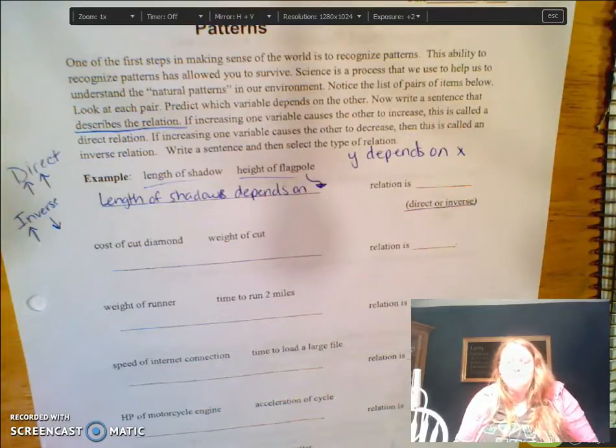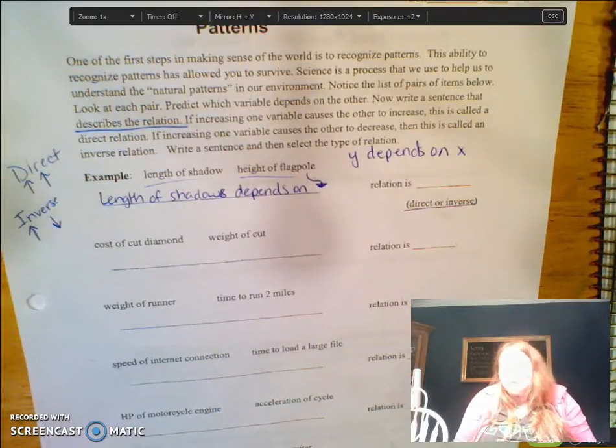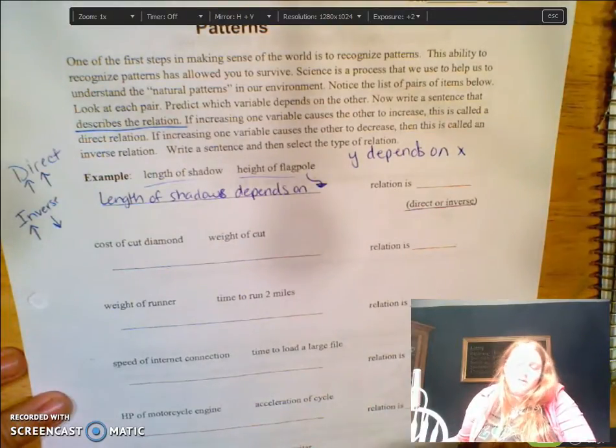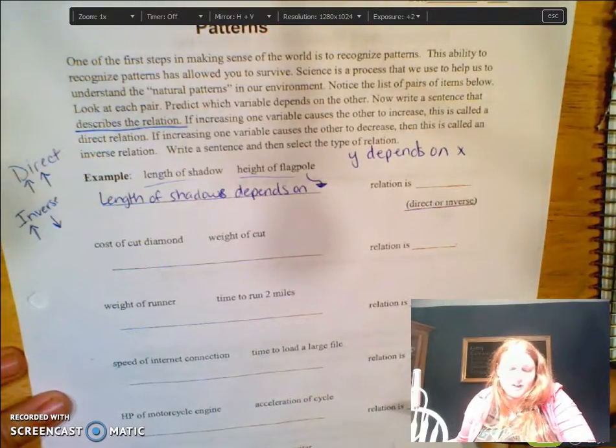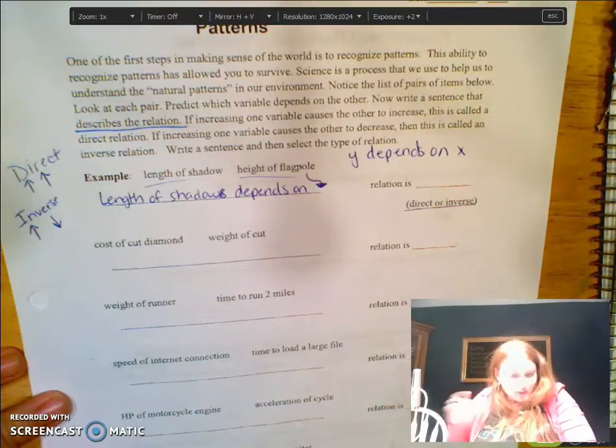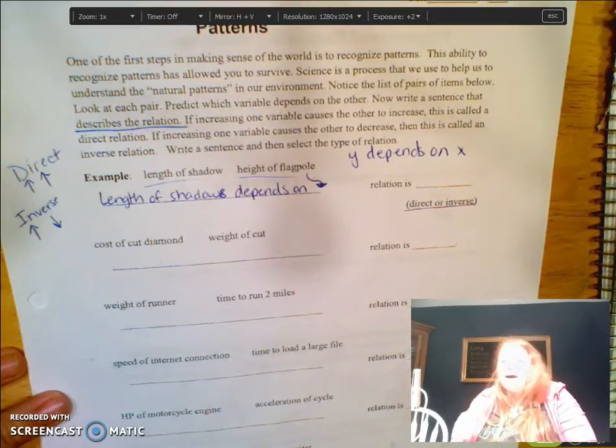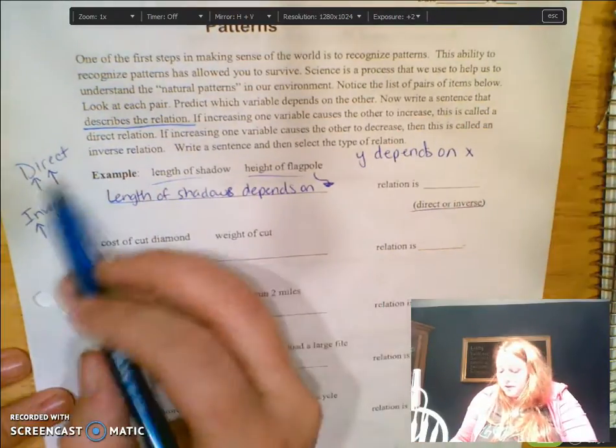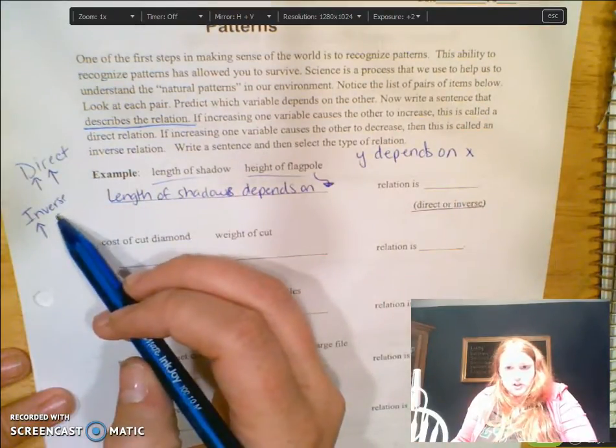Hey guys, let's go over this patterns worksheet. First of all, you're going to be given a bunch of examples of different variables, whether they're independent variables or dependent variables, and you have to look at the two and figure out how they are related—if they are a direct relationship or an inverse relationship. You're going to type that in right here, and then you have to actually write the relationship for each one.